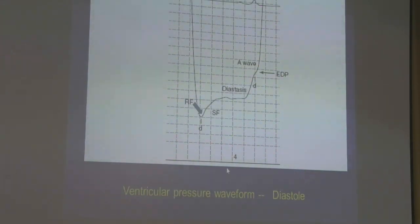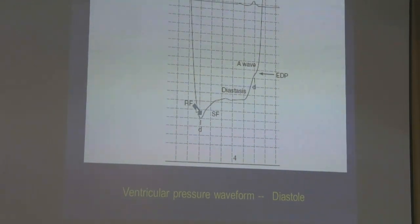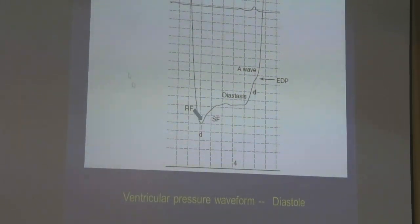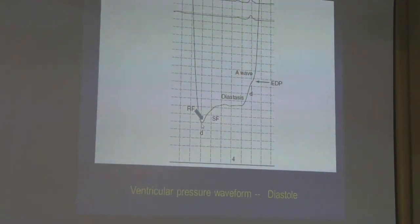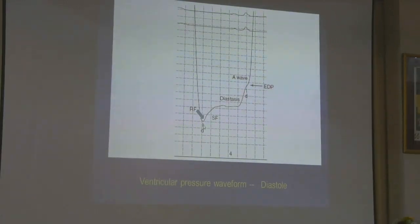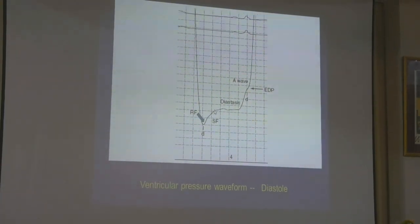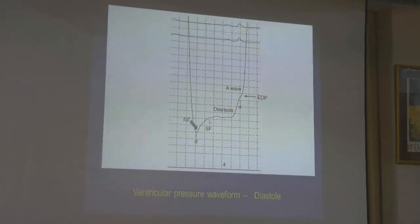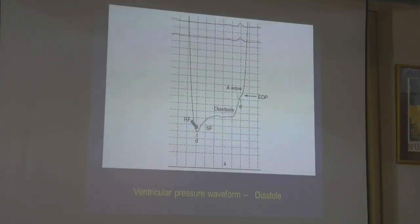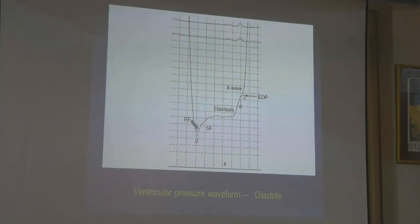Moving on to the ventricles. In the left ventricle in diastole, you have the early rapid filling phase — occurring from very low, near-zero pressure, coming up very rapidly in early diastole. Then the volume increases but the pressure doesn't go up — there is diastasis. Then the P wave comes, the atria contracts and contributes the atrial kick filling to the left ventricle at the end of diastole. Then you have the end diastolic pressure point.